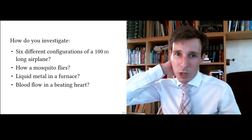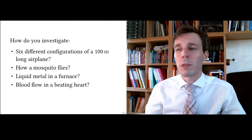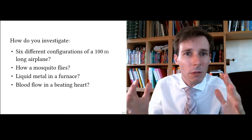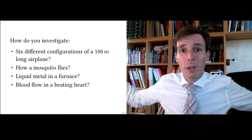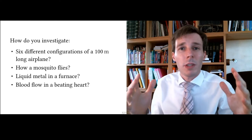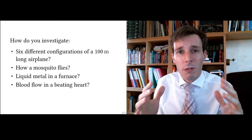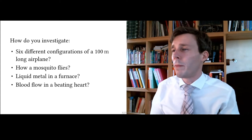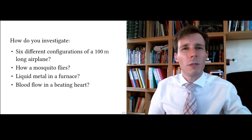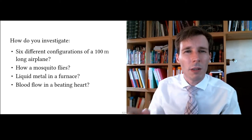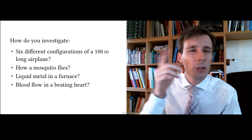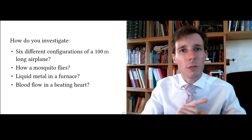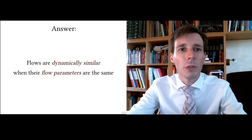Once you make all of those models, the question is: how do you adapt the flow parameters? For example, your airplane model is much cheaper than a real-size airplane — this model is 20 times or 100 times smaller than the large airplane. So what do you do with the velocity? Do you make it 100 times smaller too, or should it be 100 times larger? This is the question we're trying to answer.